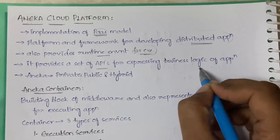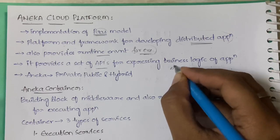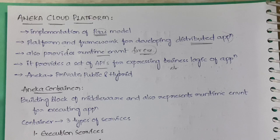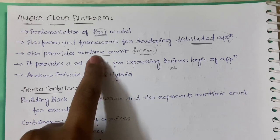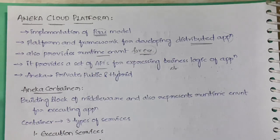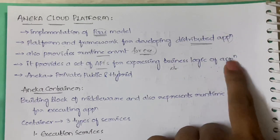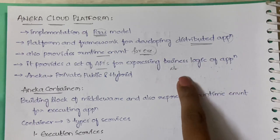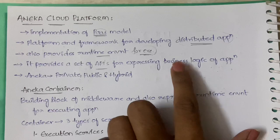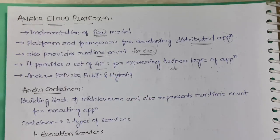These APIs are used for expressing the business logic of the application using programming abstractions. Abstraction, as you may know from OOP concepts, involves hiding the implementation details. So Aneka provides APIs with which we can perform abstraction of the business logic present in the application — the implementation of the business logic can be hidden using these APIs.